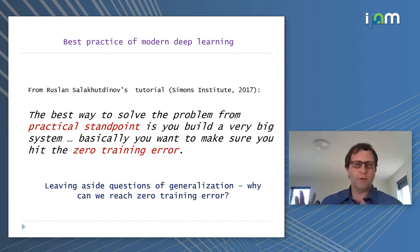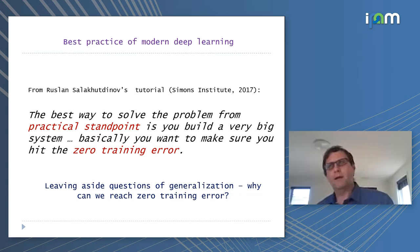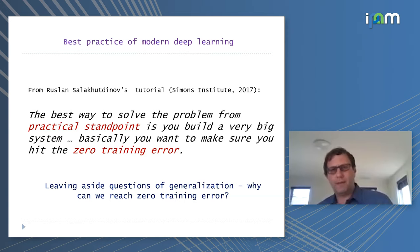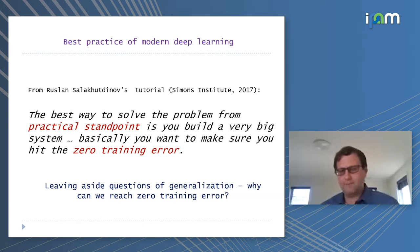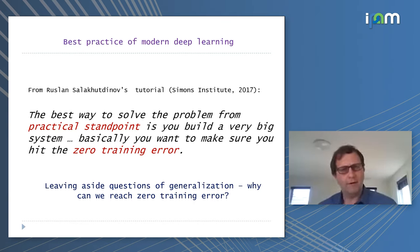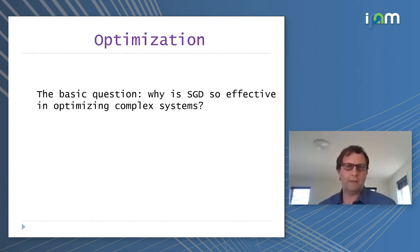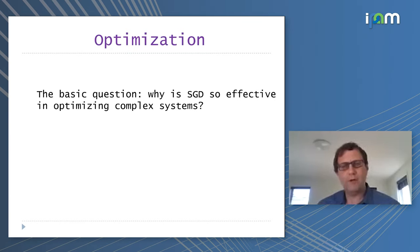Why would a system like that generalize well? It turns out that a system, even without any further regularization, already has very good generalization. That's a subject for a separate talk, but leaving aside questions of generalization, there is an obvious question: why can we reach zero training error?